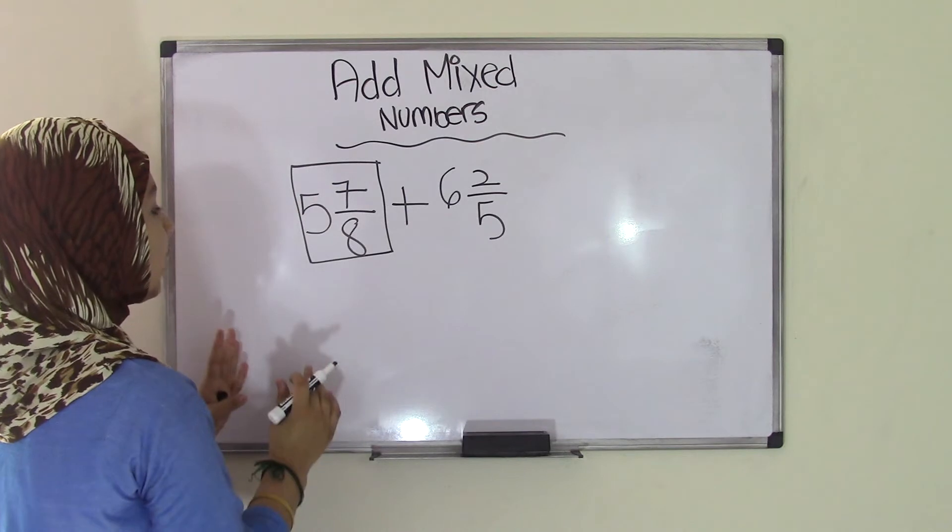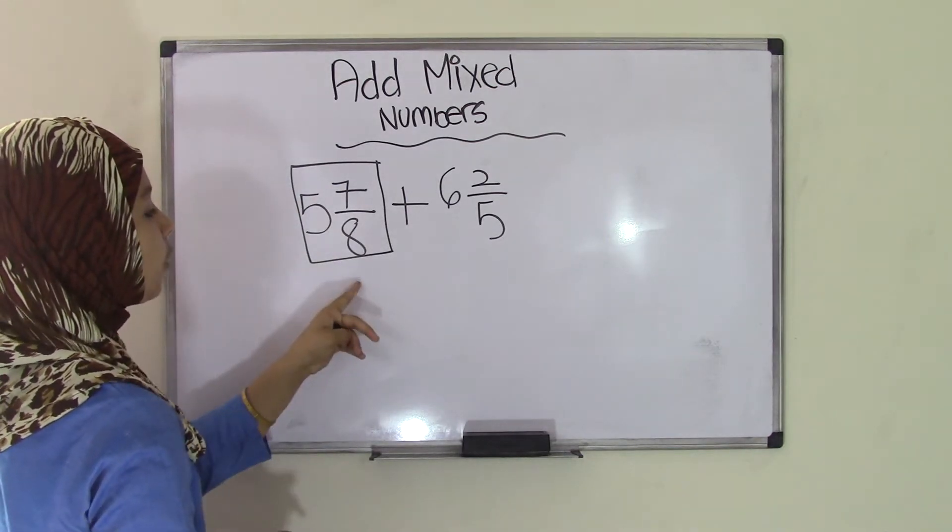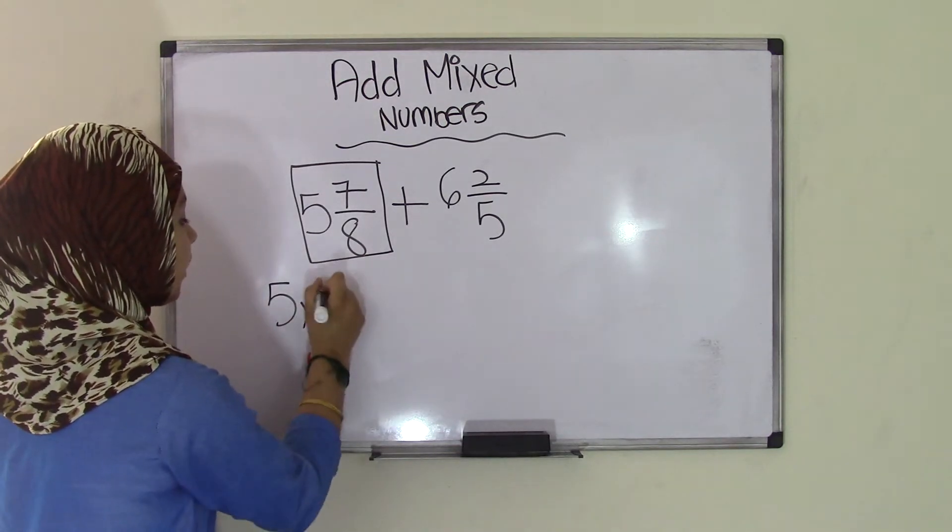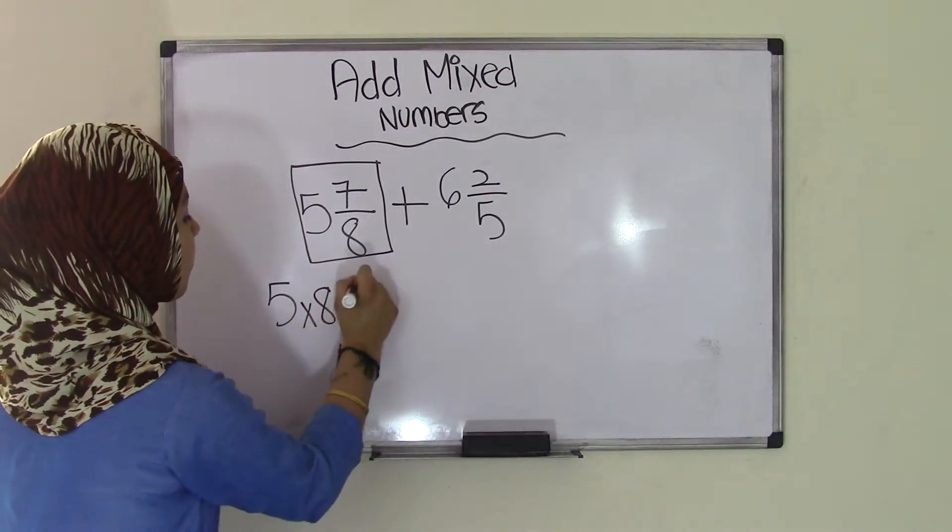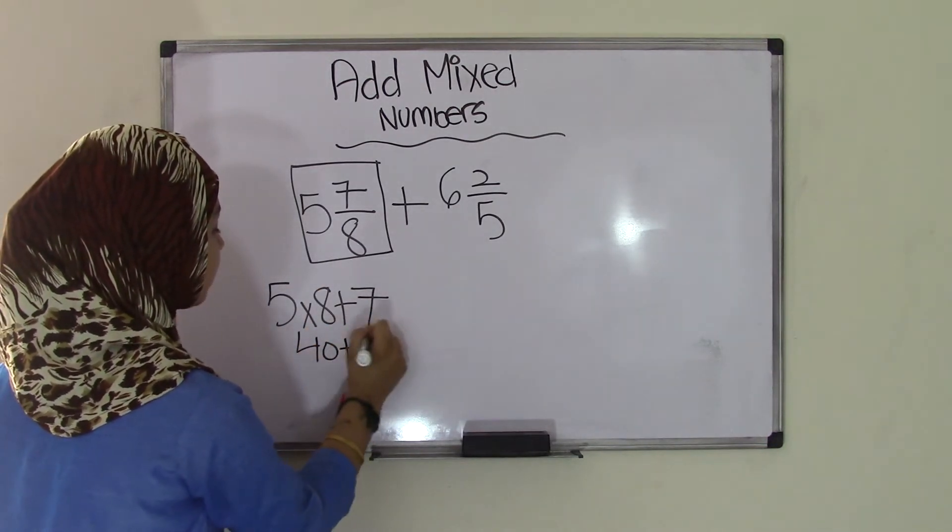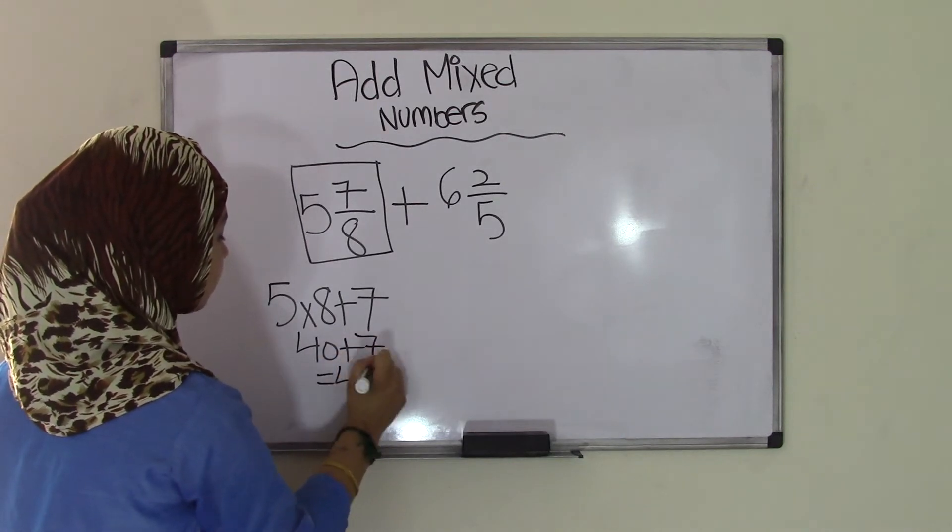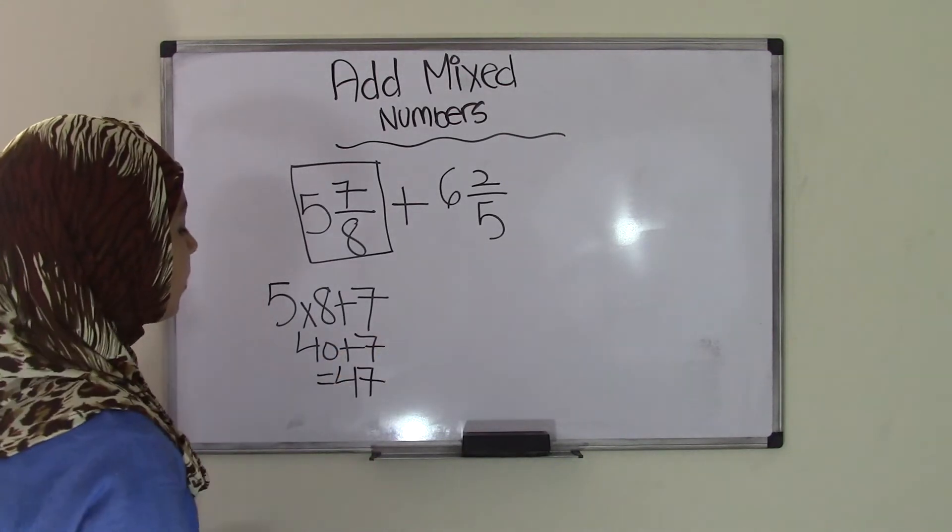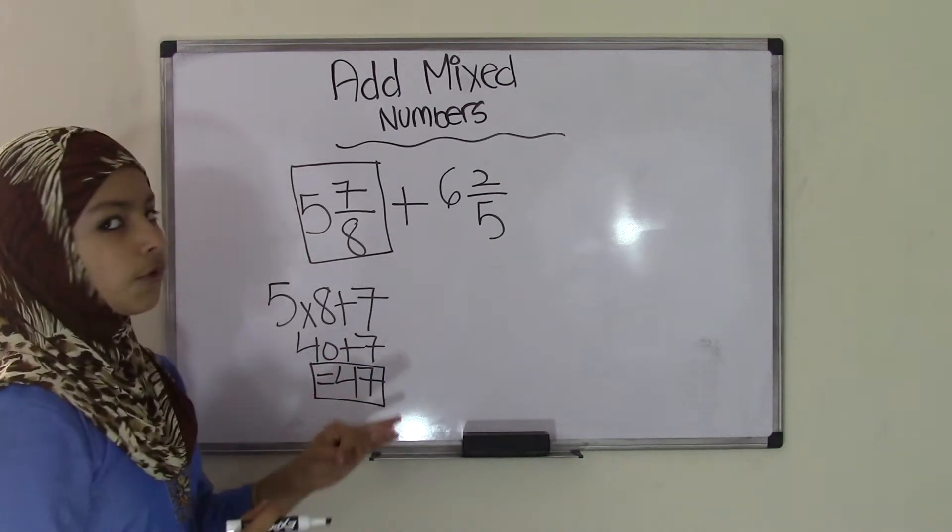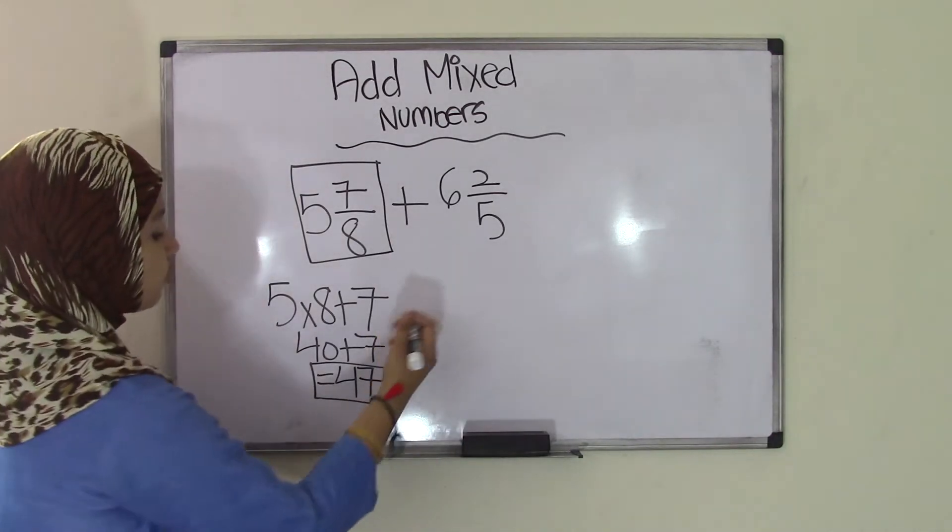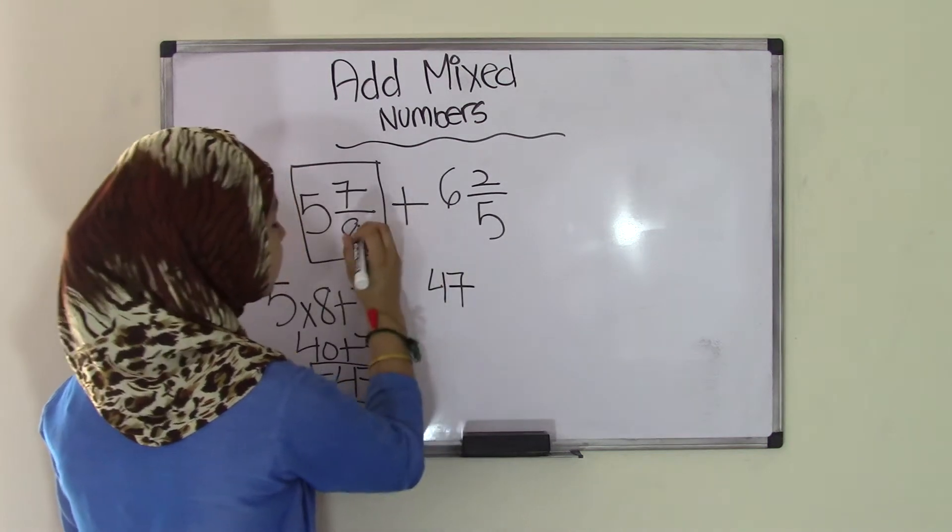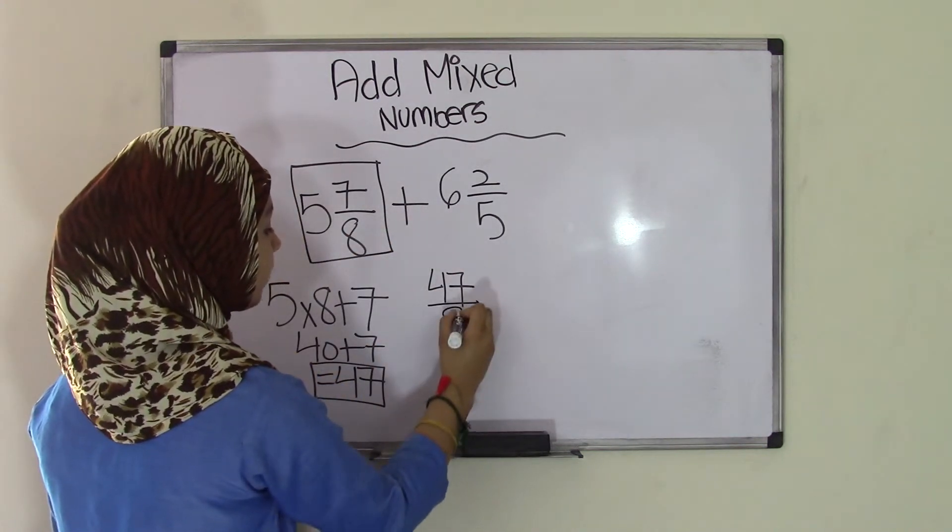Remember, the formula is divisor times denominator plus numerator. So, divisor means 5 times denominator, 8, plus numerator, which is 7. 5 times 8 is 40, plus 7, equals 47. So that means we have 47. Now remember, your final answer of 47 is always going to become your numerator. So now you have 47, and the denominator stays the same. So you still have 47 over 8.